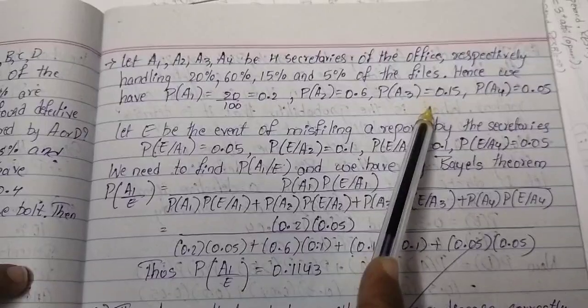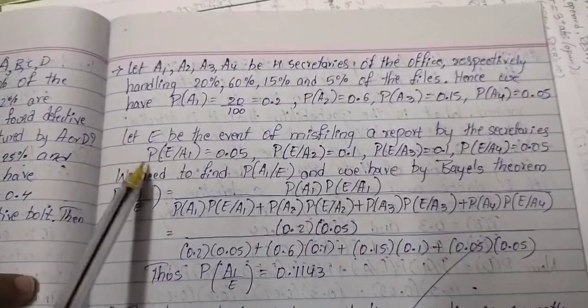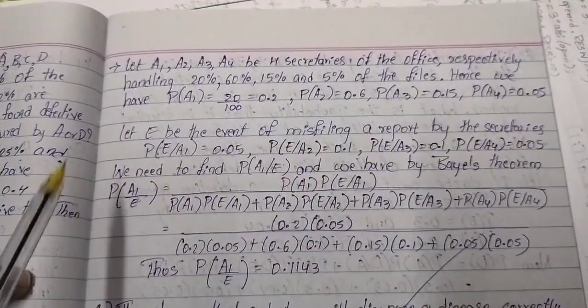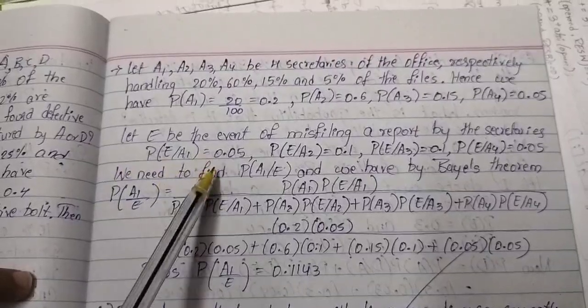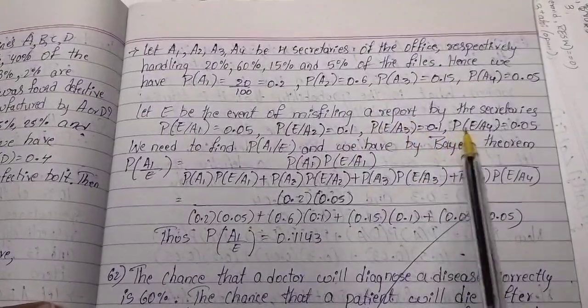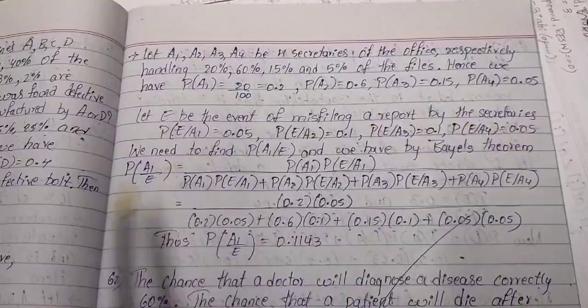P(A3) = 0.15 and P(A4) = 0.05. Let E be the event of misfiling a report by the secretaries. P(E|A1) = 0.05, P(E|A2) = 0.1, P(E|A3) = 0.1 and P(E|A4) = 0.05.